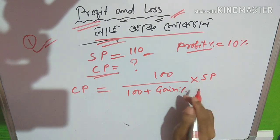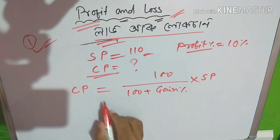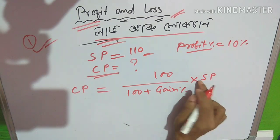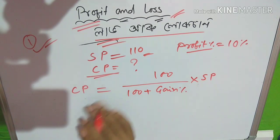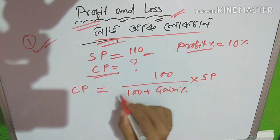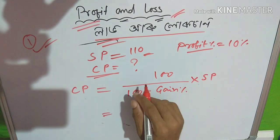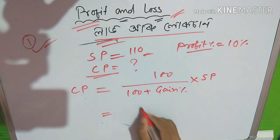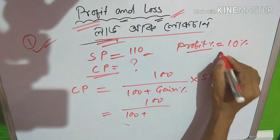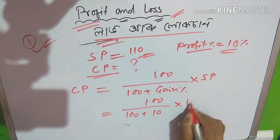According to the formula, you can use it. This formula is the one you can use for the profit price, into selling price: 100 plus gain percentage, 10 percent into selling price.